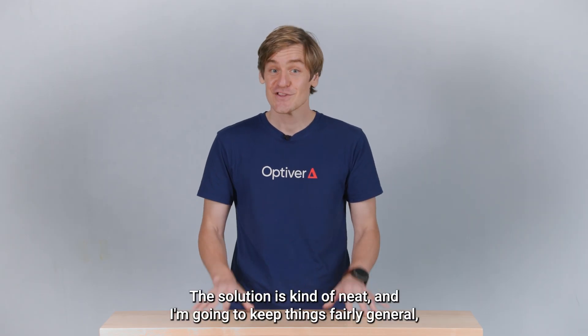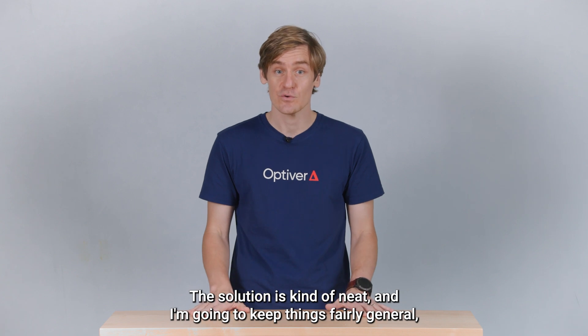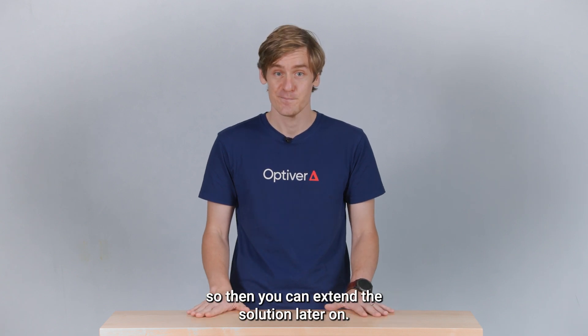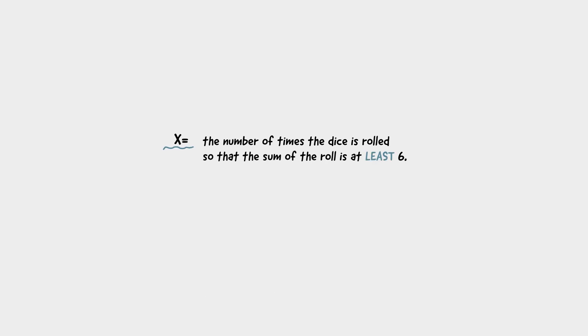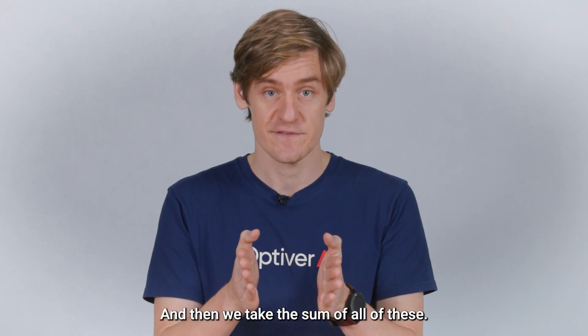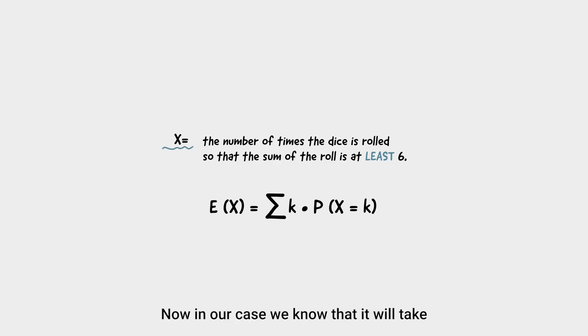It's time for us to prove it. The solution is kind of neat and I'm going to keep things fairly general so that you can extend the solution later on. To do things right, we will let x denote the thing of interest. That is, x is the number of times the dice has to be rolled so that the sum of the rolls is at least six. The formula for the expected value of x looks like this. We take each outcome k, that's the number of rolls it takes for the sum to be six or greater, and we multiply by its associated probability. And then we take the sum of all of these. Now, in our case, we know that it will take at least one roll and at most six rolls. So we can attach a range of one through six to our sum.